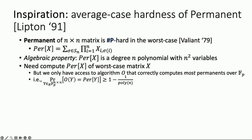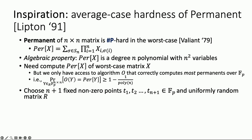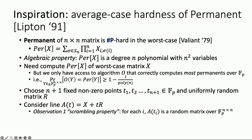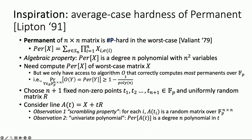So how do I compute the permanent correctly? It's a polynomial extrapolation argument. We choose n+1 fixed non-zero points t₁, t₂, …, t_{n+1} in our field. Then we take a uniformly random matrix R, fixed. We consider the line A(t) = X + t·R. Two observations: first, the scrambling property — for each i, A(t_i) is a uniformly random matrix over my field, because I took a worst-case matrix X and shifted it by something random.